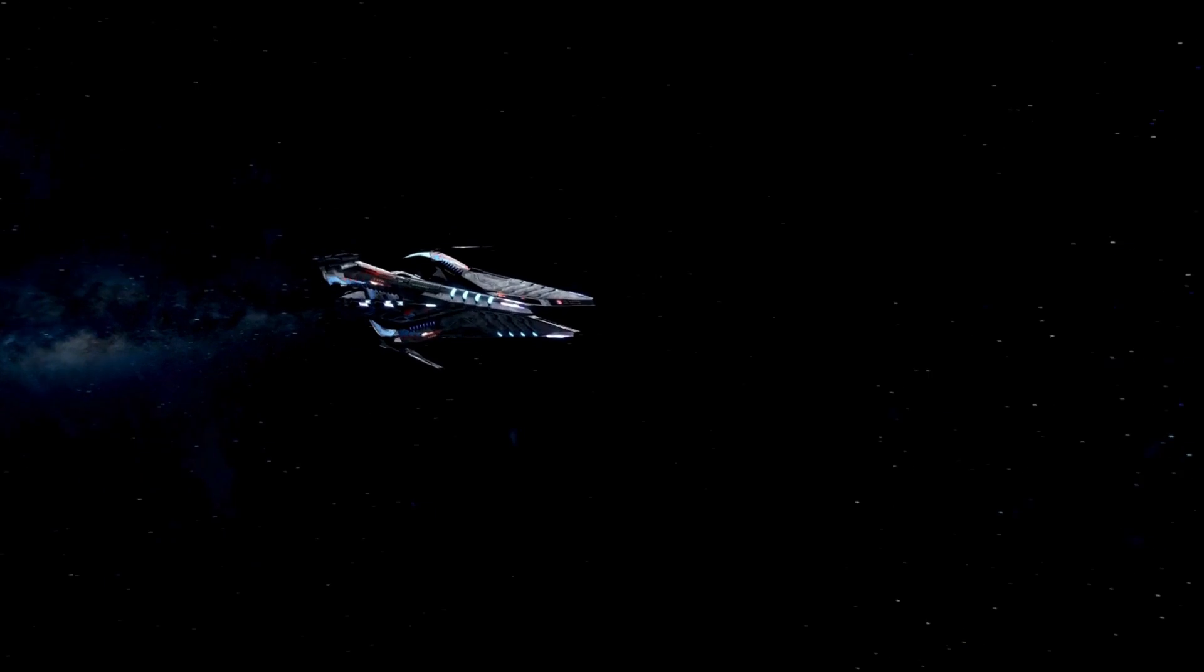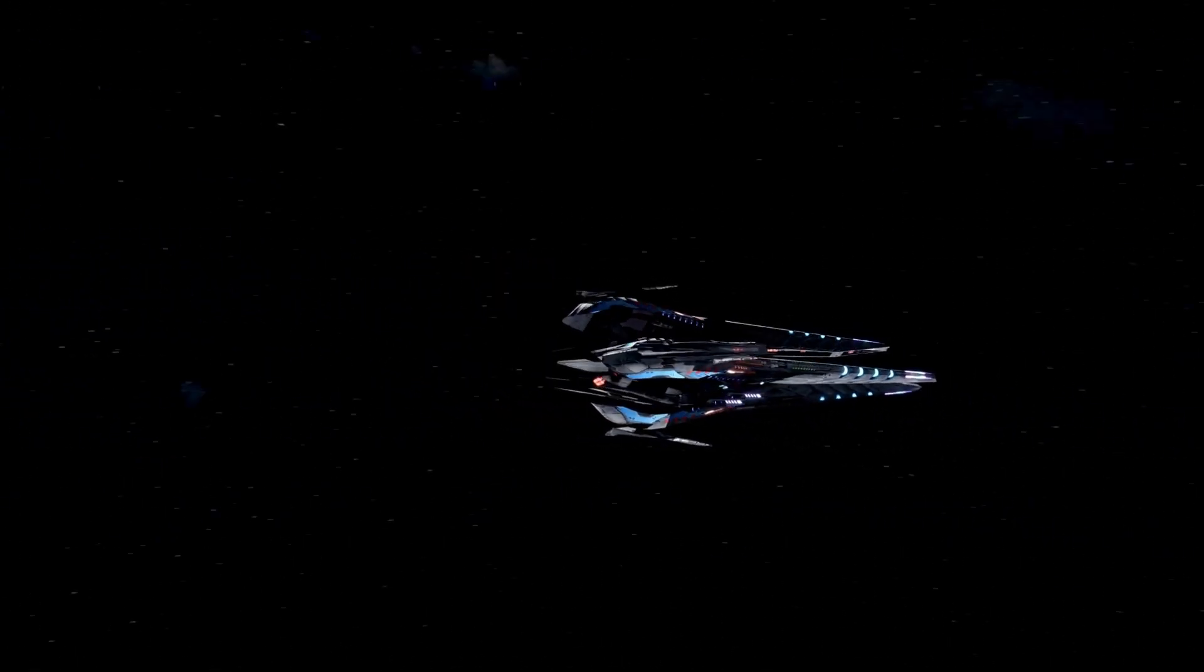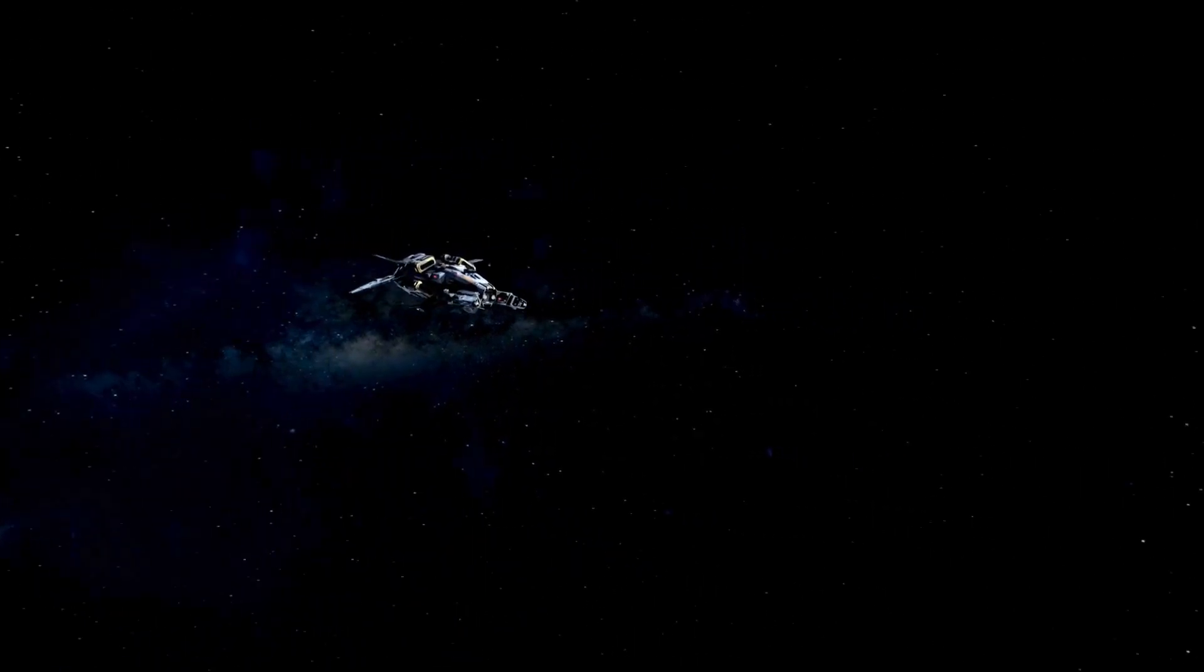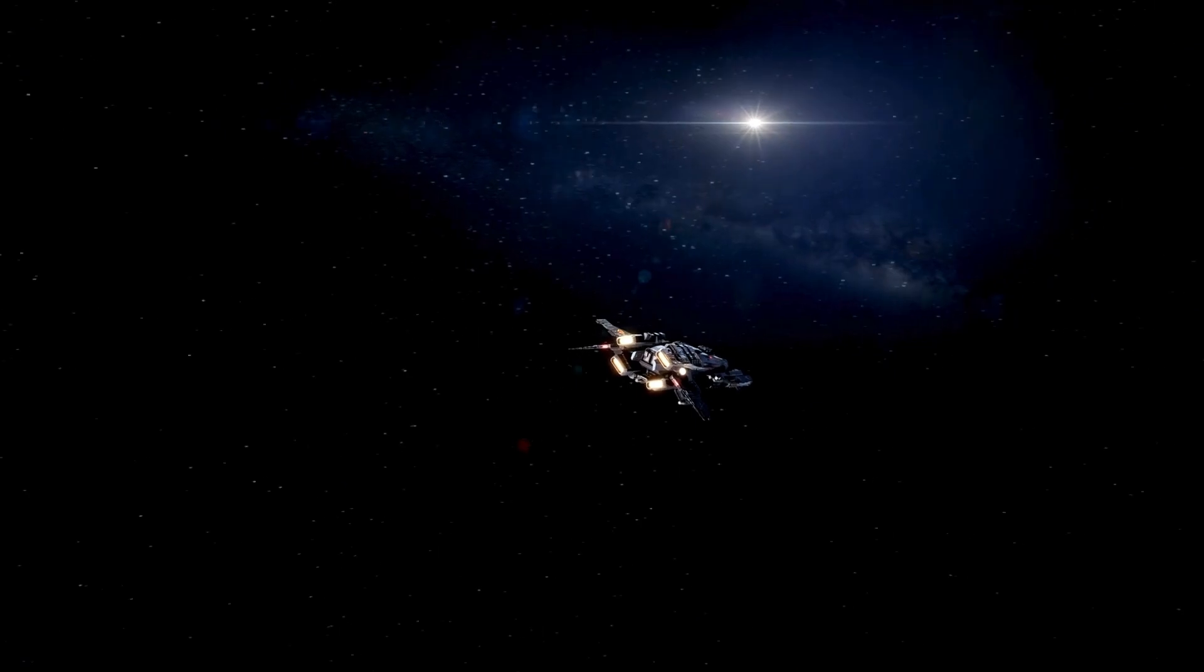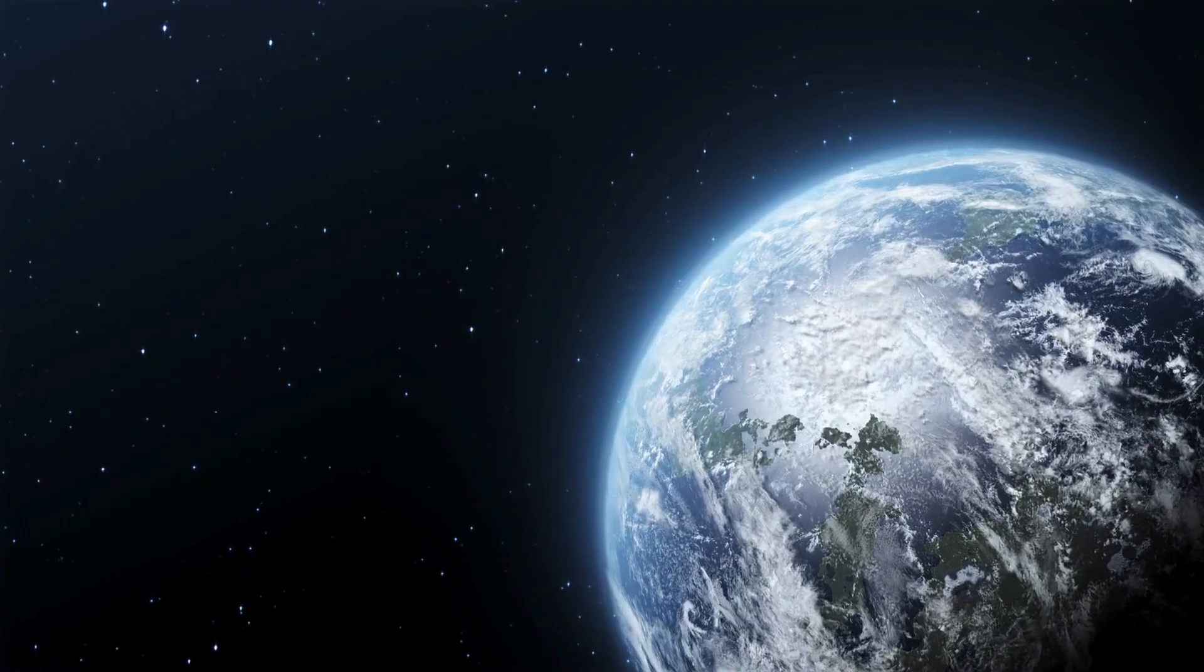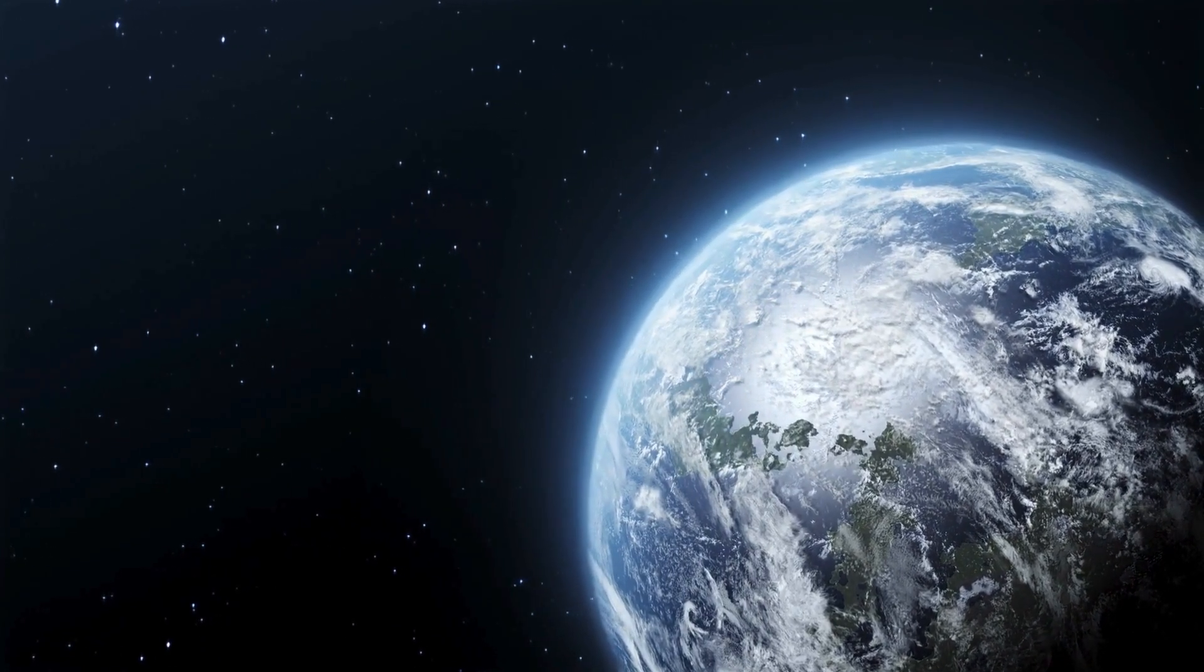But among them all, Proxima Centauri b stands out as a truly remarkable and enigmatic planet. With a year that lasts just 11.2 Earth days and a distance from its star that is 20 times closer than Earth is to the Sun, it is likely that one side of the planet is always bathed in daylight while the other side remains in perpetual darkness.